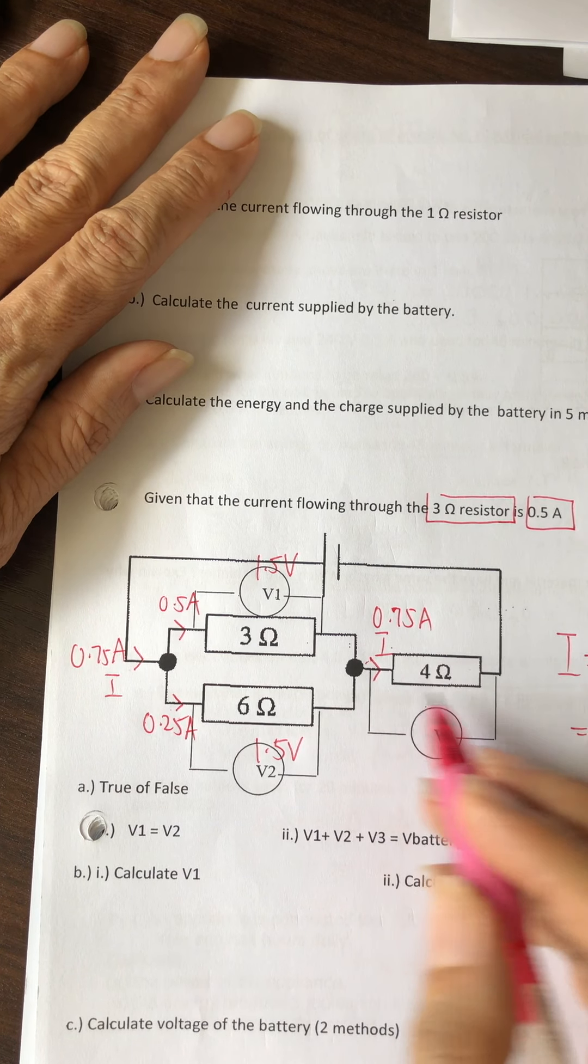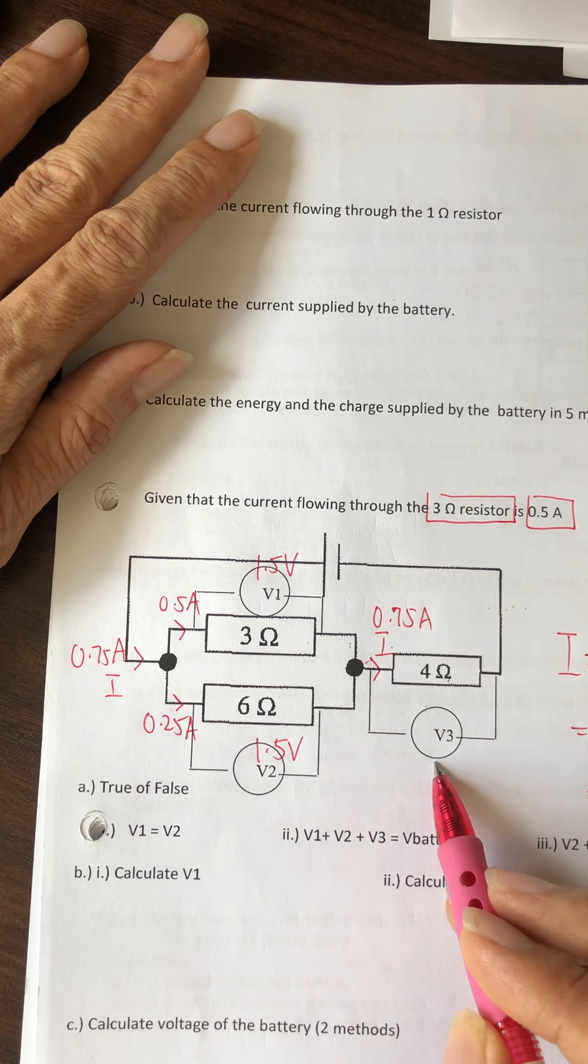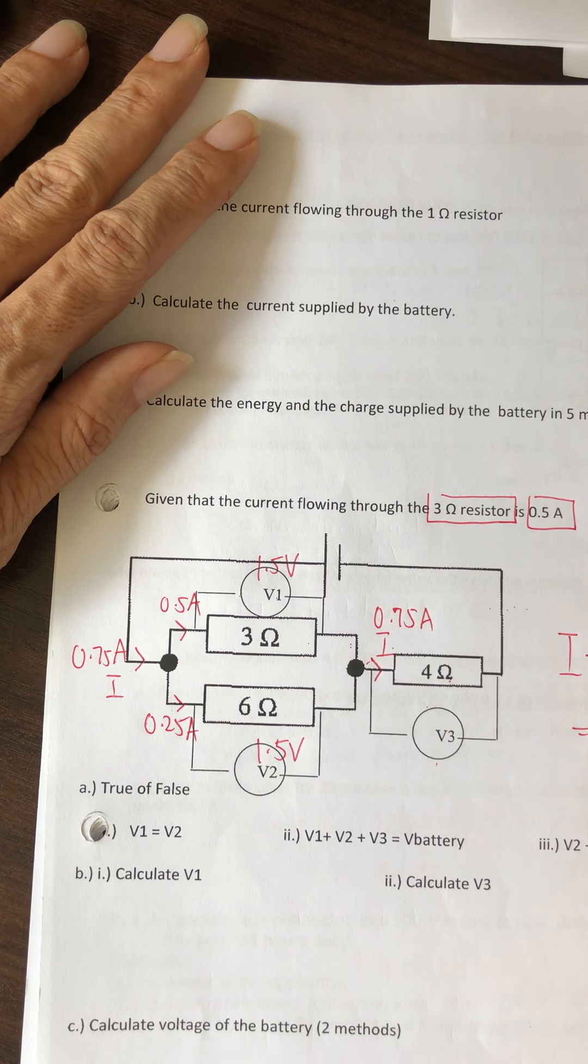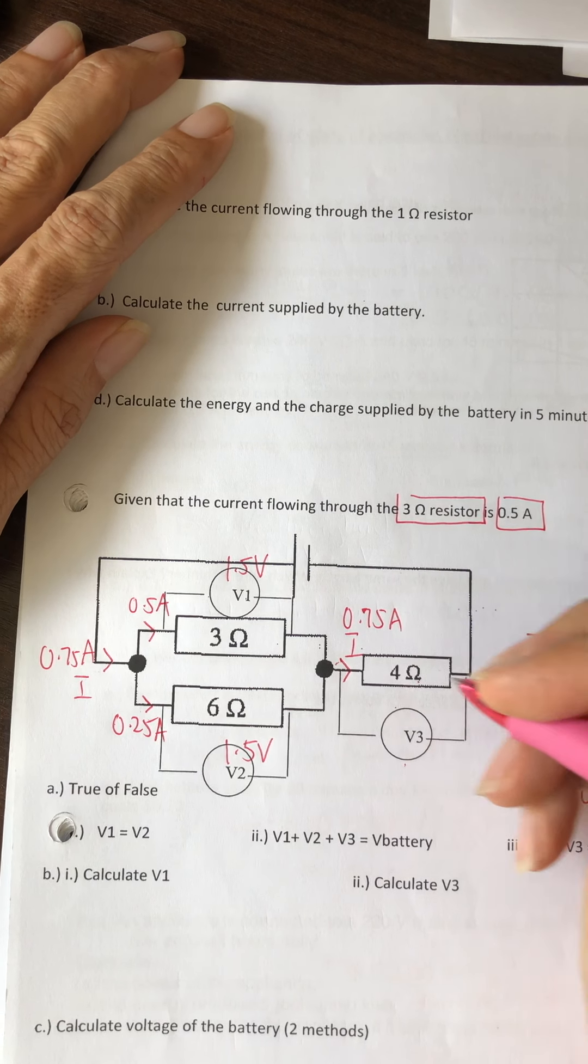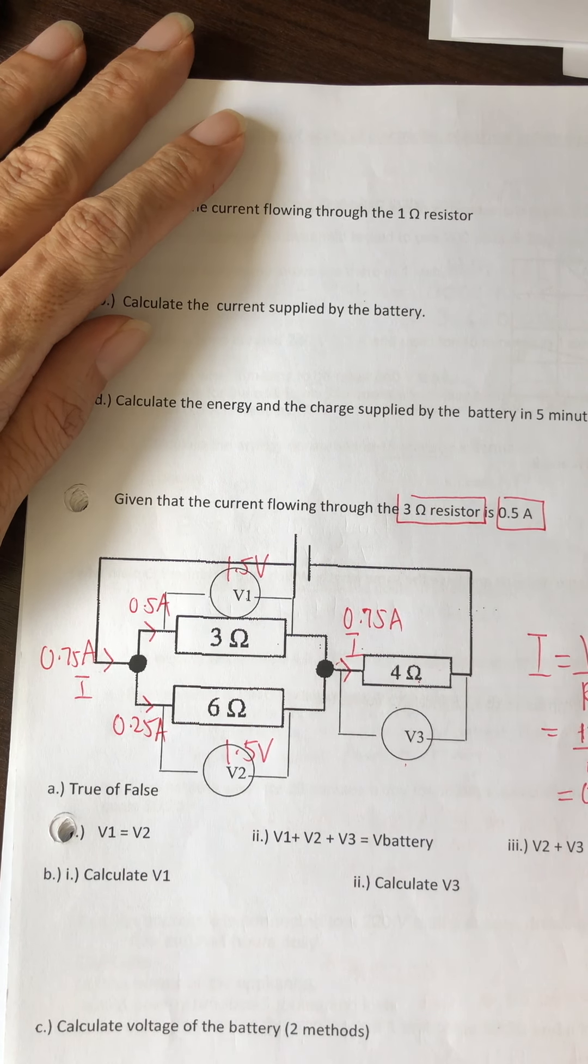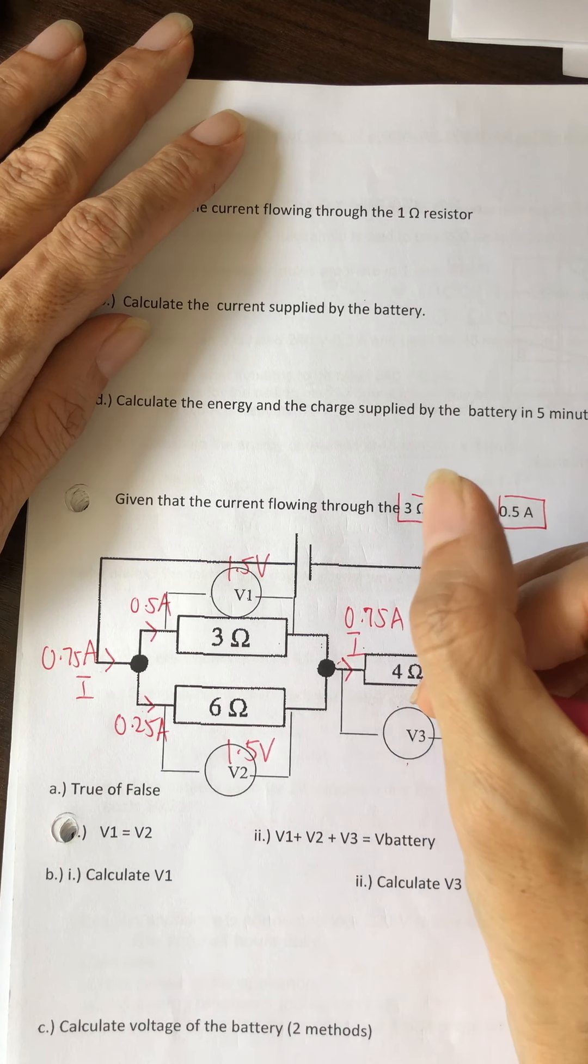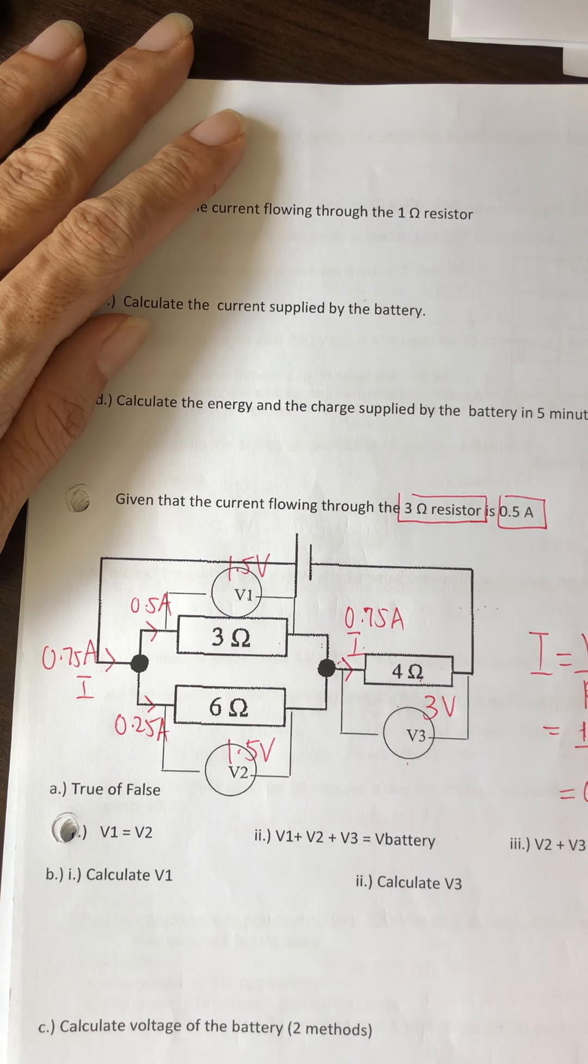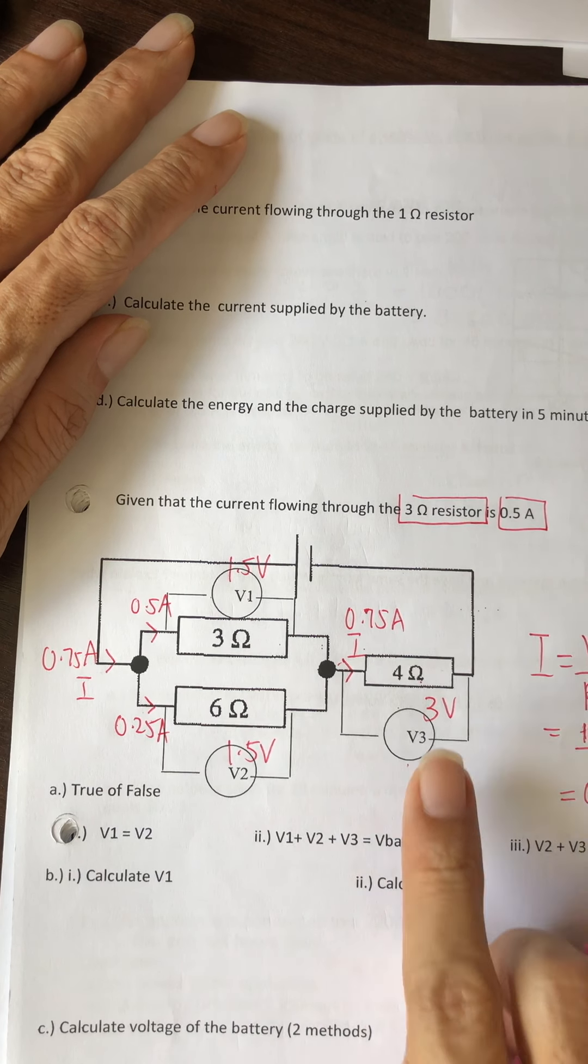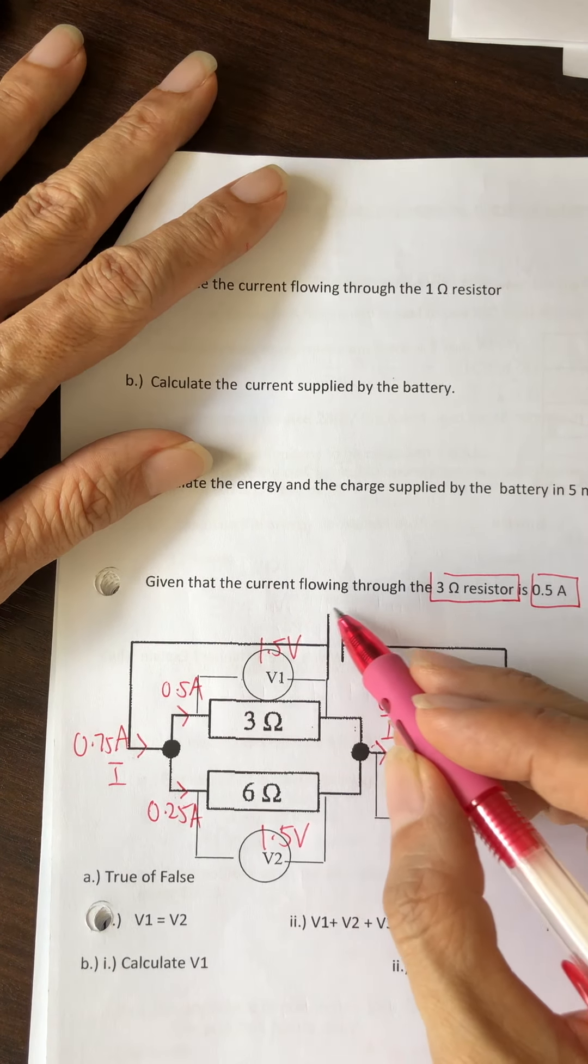Once you have labeled, you can quickly see here 0.5, 0.25, that means here is 0.75 amperes. If here's 0.75, then here is also 0.75. Then the rest follows - here 0.75 and here is 4 ohms. Using V equals IR, what do you get?